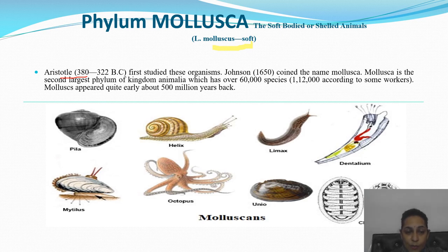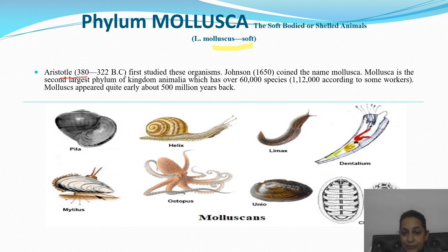Some examples from phylum Mollusca: Pila, which you will see in your lab; Helix (Garden Snail); Limex; Dentalium; Mytilus; Octopus; and Unio.